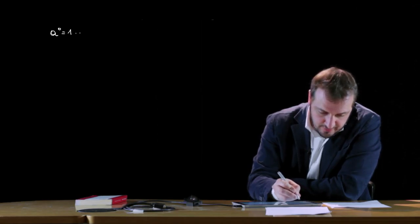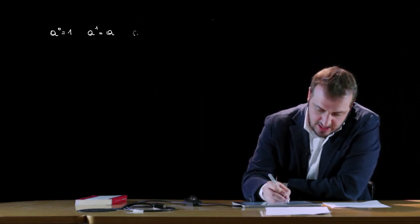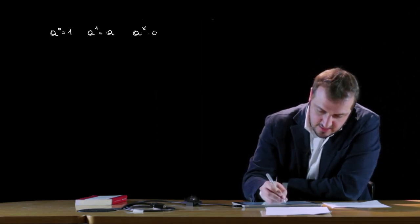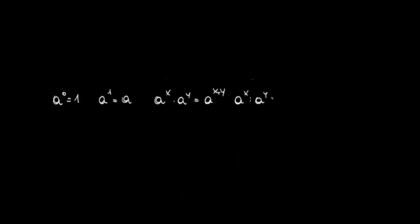Per entrambi i casi dell'esponenziale valgono le proprietà delle potenze: a^0 = 1, a^1 = a; la regola del prodotto a^x · a^y = a^(x+y); la regola del quoziente a^x / a^y = a^(x−y); e la potenza di potenza (a^x)^y = a^(x·y).